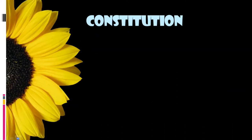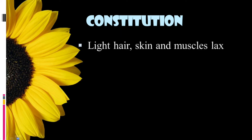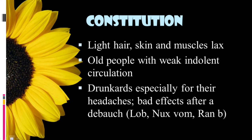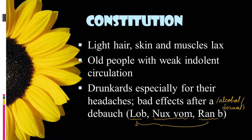Before knowing the symptomatology, let us understand the constitution type of Agaricus. It acts profoundly in persons with light hair, light skin, and lax muscles, and in older people with weak indolent circulation. It is also indicated for drunkards, especially for their headaches and bad effects after a debauch. Agaricus is compared with Lobelia, Nux Vomica, and Ranunculus Bulbosus — all related to alcoholic delirium situations.